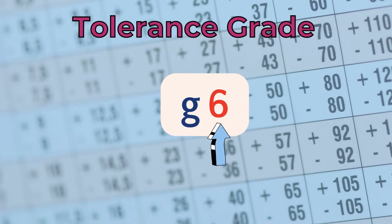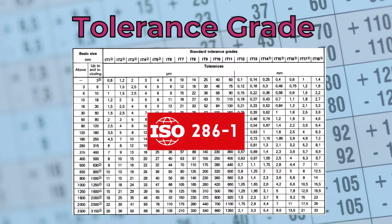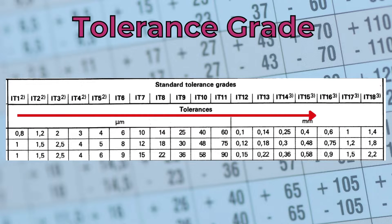The tolerance grade is the difference between the limits of size — that is, the upper limit minus the lower limit — hence it determines the accuracy of a feature. ISO 286-1 lists 18 standard tolerance grades, denoted as IT1 to IT18. IT1 is the smallest and most accurate, and IT18 is the largest.